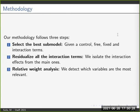So our methodology follows three steps. First, we select the best submodel, given control, fixed, and interaction terms. Then we residualize all the interaction terms, where we isolate the interaction effects from the main ones. And third, we apply a relative weight analysis, where we detect which variables are the most relevant.